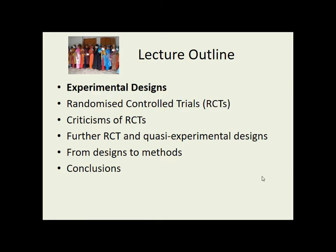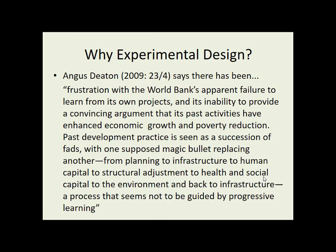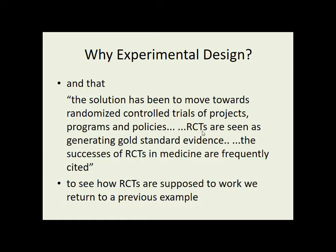So first of all, we look at experimental designs. What's the motivation for this? Angus Deaton, a British economist who won the Nobel Prize for Economics in 2015, expressed a frustration that we're trying the same thing again and again and never seem to learn from it or build on what's gone before. The conclusion is we need to move towards RCTs, or Randomised Controlled Trials. As I said in last week's lecture, these are seen as the gold standard of evidence, and we often build upon the success they're supposed to have had in medicine.